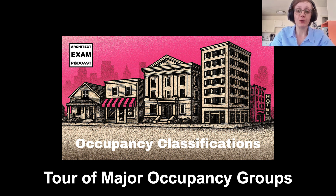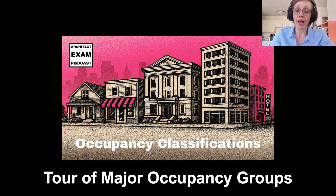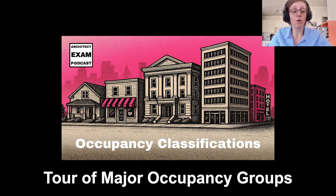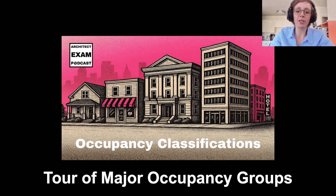Finally, Group U, which stands for utility, covers miscellaneous structures that don't fit other categories — things like sheds, detached garages, barns, and fences over six feet high. These generally have low occupancy and minimal requirements. It's the catch-all category for simple structures with few occupants.